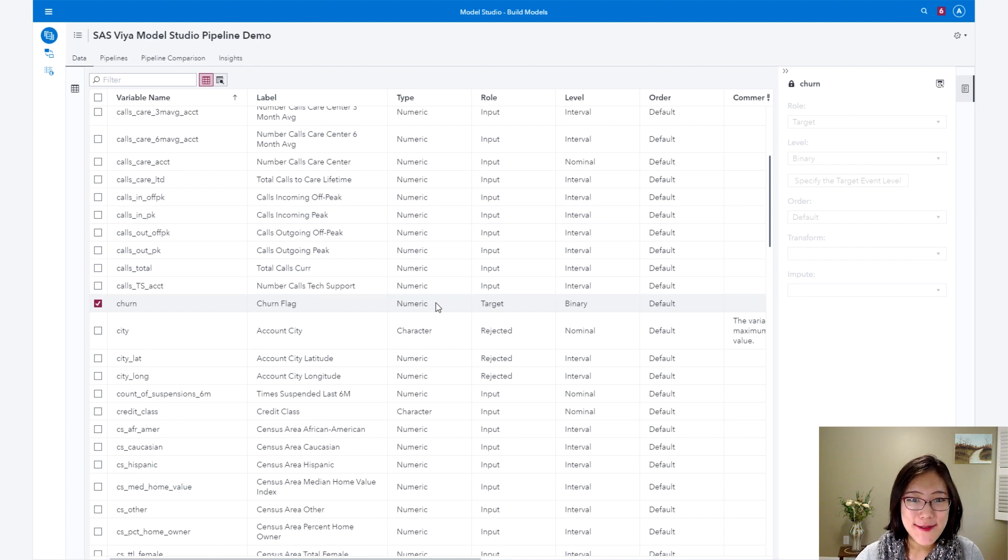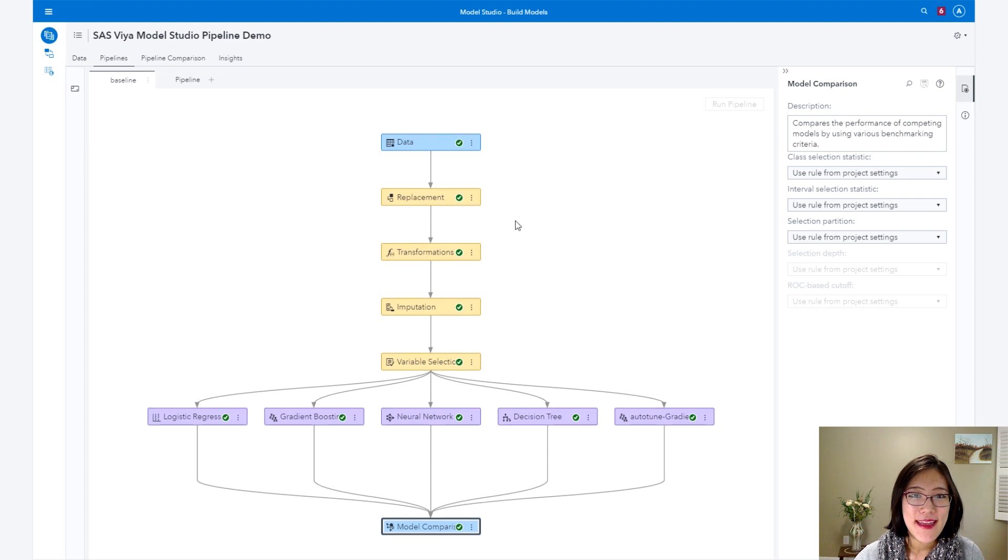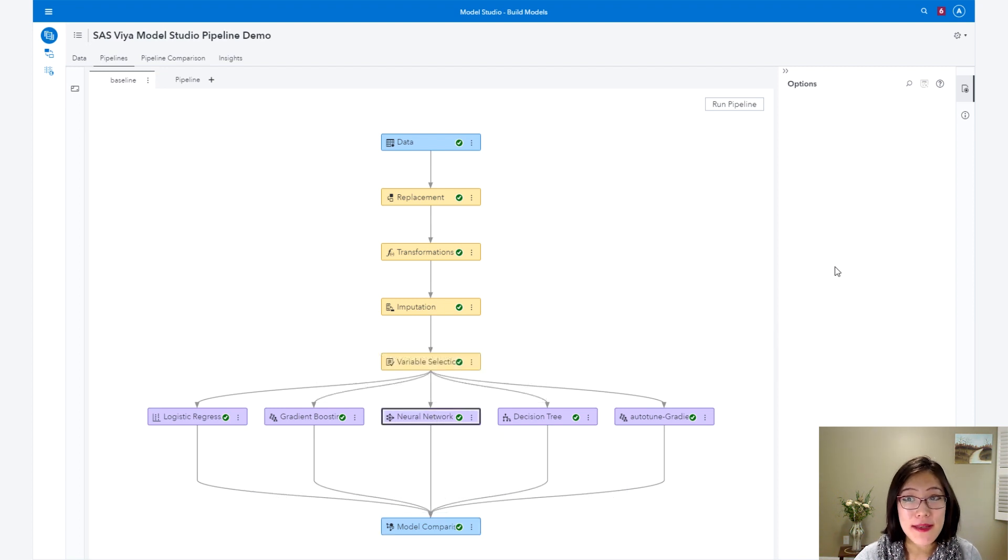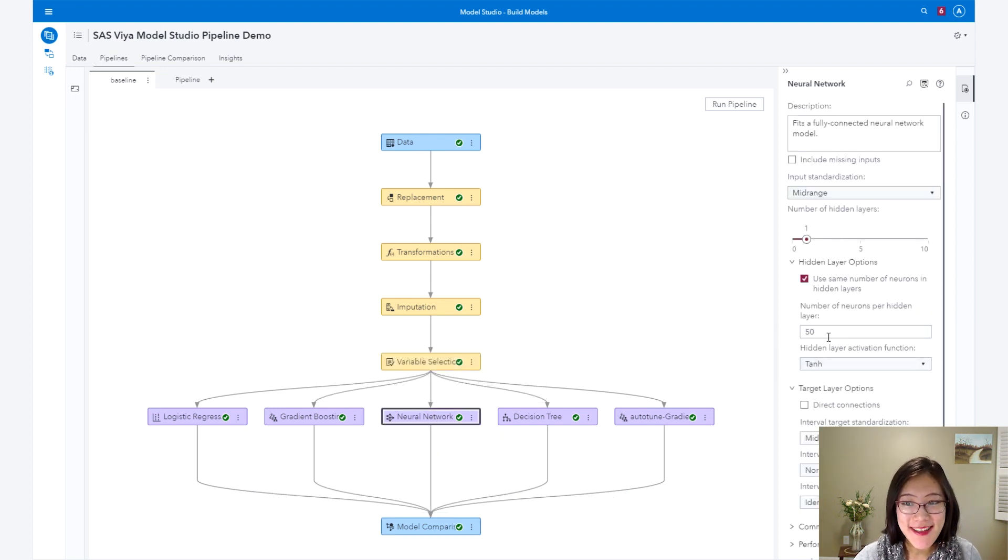In SAS Viya Model Studio, we approach data science projects in this proceduralized way called a pipeline. In here, we start with data, then we have this procedure to preprocess the data. After that, we can select a set of models of our interest and then build them after we preprocess the data and then compare them in the end. Each model can be customized by choosing these options on the right. So I pre-ran this already, so let's see what the result is.